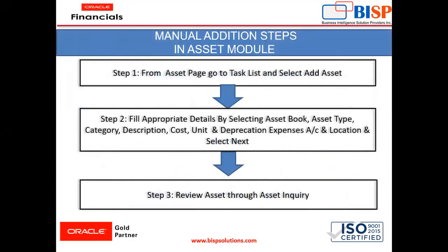These are the steps to create an asset in Oracle Fixed Asset Module. Step one: from the asset page, go to the task list and select the Add Asset option. Step two: fill in the appropriate details by selecting asset book, asset type, category, description, cost, unit, depreciation expenses, and location, then click Next. Step three: you can review the asset through asset inquiry.